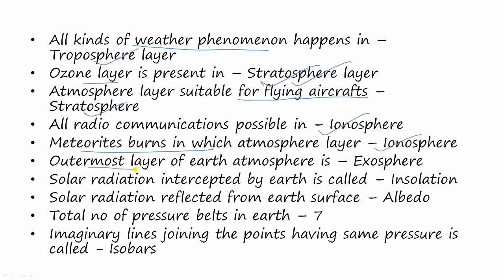The outermost layer of earth is the exosphere. The solar radiation intercepted by earth is called insolation, and solar radiation reflected from the earth's surface is called albedo.